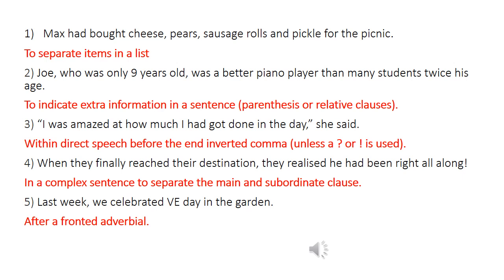Remember that the comma at the end of direct speech could be replaced with a question mark, exclamation mark or full stop, so it's not always a comma. Sentence four is a complex sentence where the subordinating conjunction is at the start of a sentence. Therefore, we need to use a comma to separate the main and subordinate clauses. Remember, you can have a complex sentence where the subordinating conjunction is at the middle point, and then you don't need a comma. Sentence number five uses a comma after a fronted adverbial, and you always need a comma there. It helps to explain where, when or how something happened in a clear way.